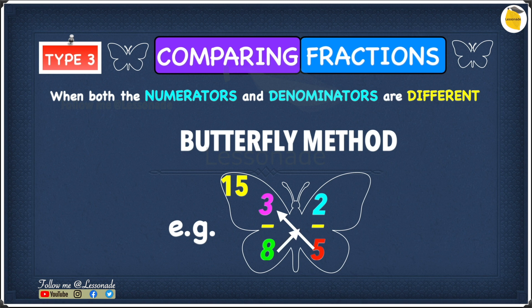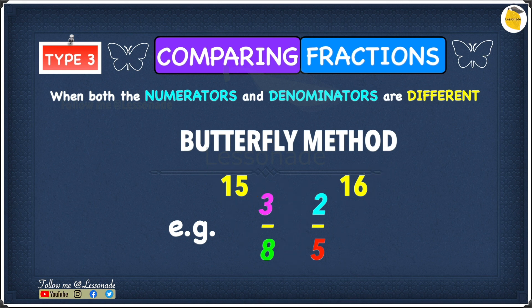Then you do the same in the other direction: eight times two gives sixteen. Now compare fifteen and sixteen — sixteen is larger. Therefore two over five is greater than three over eight, or equivalently, three over eight is less than two over five.